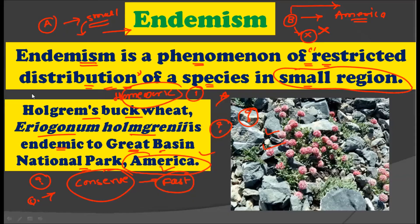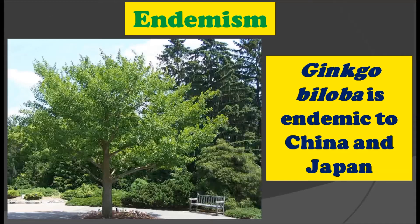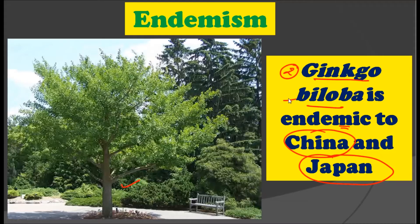In this video we are giving you some homework: you have to find out at least one species which is endemic and mention the name of that species in the comment box. The second example for endemic species is Ginkgo biloba. As you can see in the picture, Ginkgo biloba is endemic to China and Japan — this plant is only found in China and Japan and not anywhere else in the world.